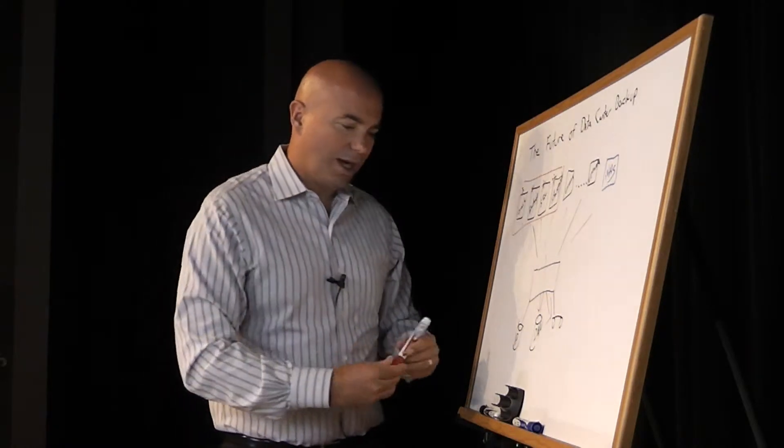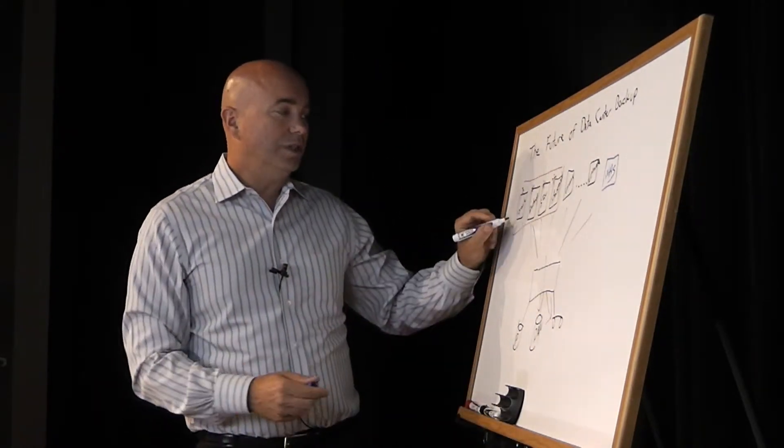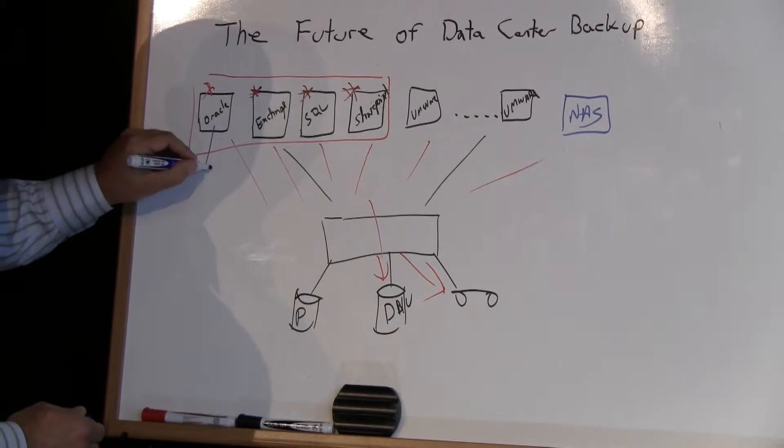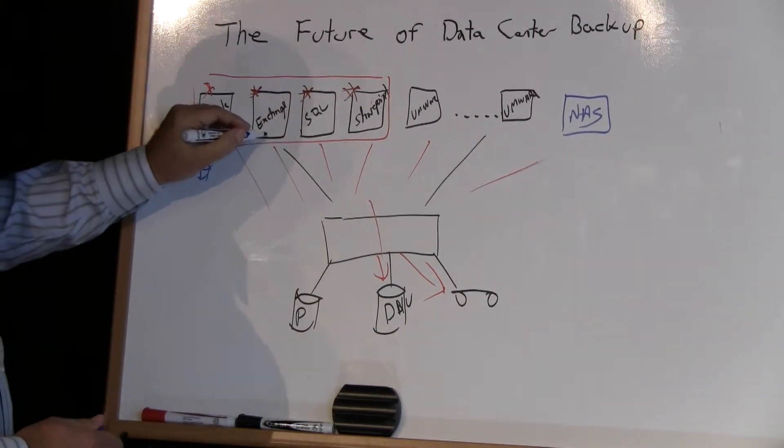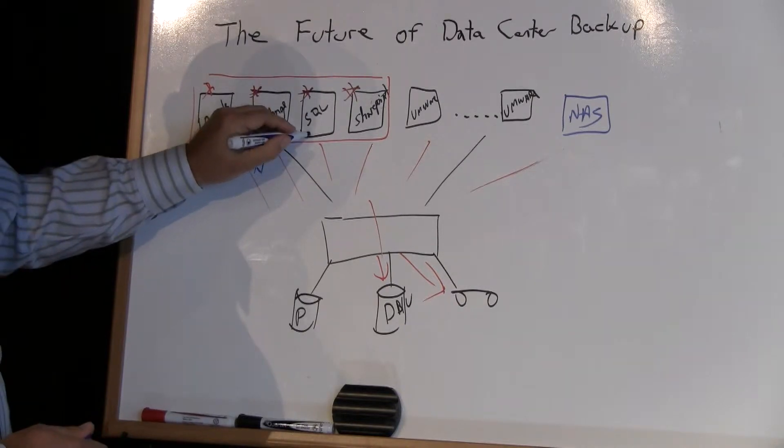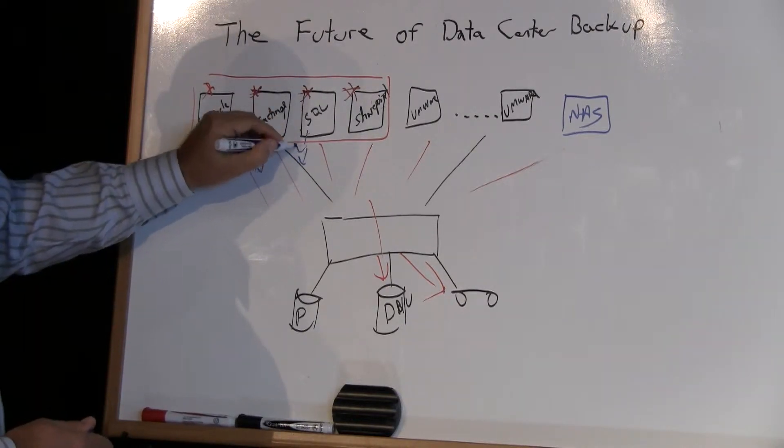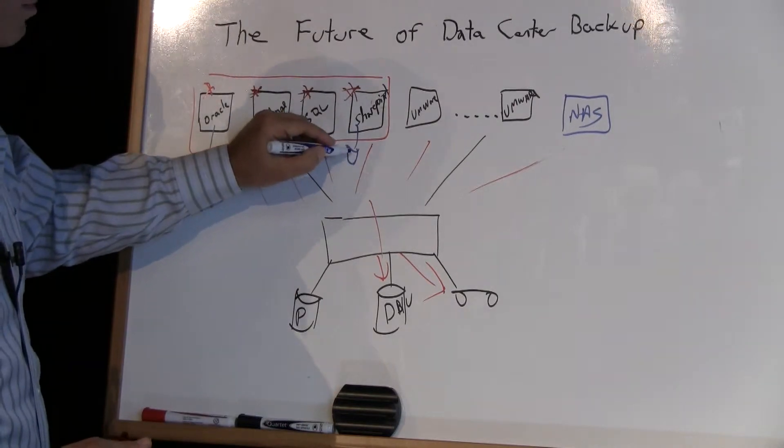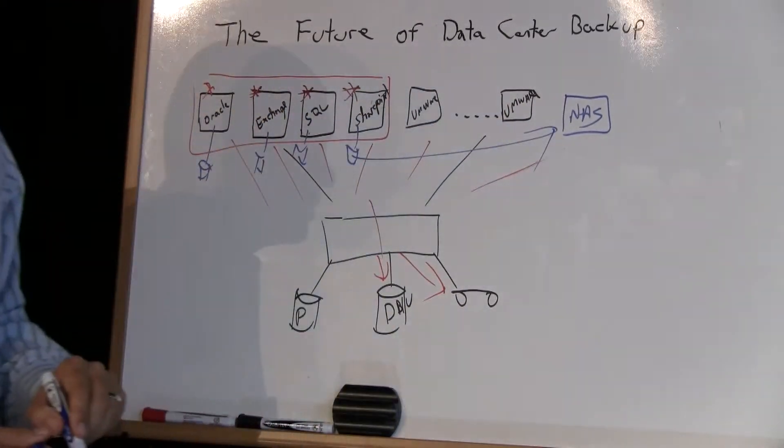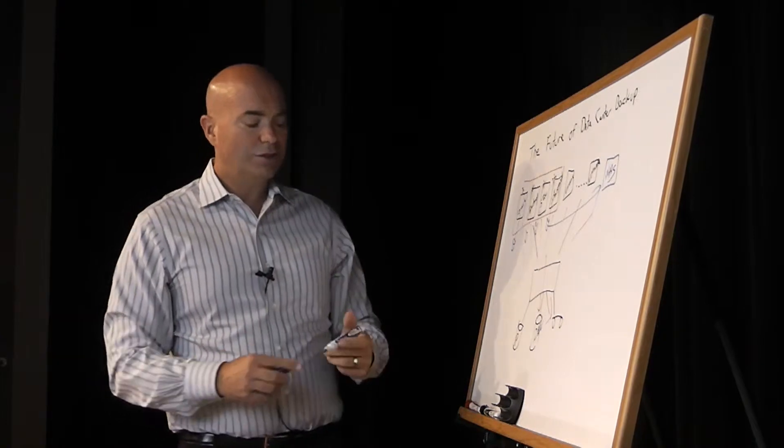And then there are little offshoot programs. The Oracle team might have their own favorite data protection product, and that might be going to its own storage. Same with the Exchange guys, same with the SQL guys. In fact, some of these might be doing their own local protection but using the company NAS as a store, so that also creates a problem.